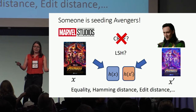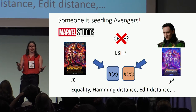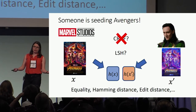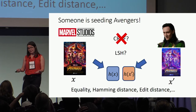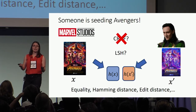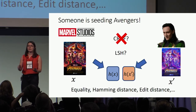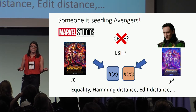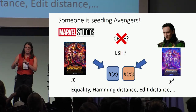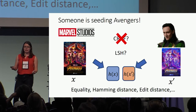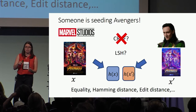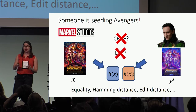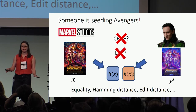X and x prime still have to be close together, otherwise the movie is no longer the Avengers. So why not use a locality-sensitive hash? Well, locality-sensitive hashing is not robust at all, and our adversary is very clever, so he can find the right bits to flip such that the hash of x prime will look far, far away from the hash of x. So this is also not an option, because it's not robust.